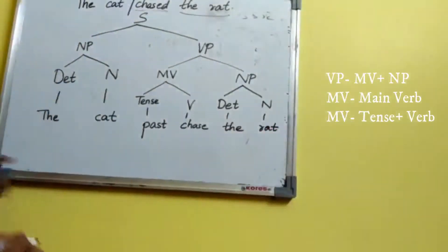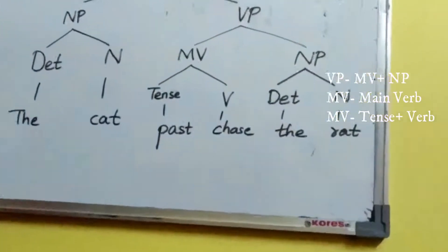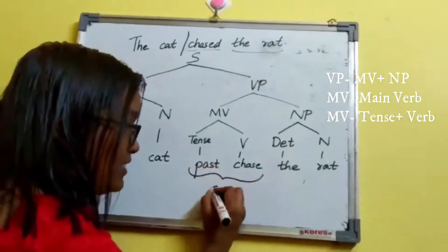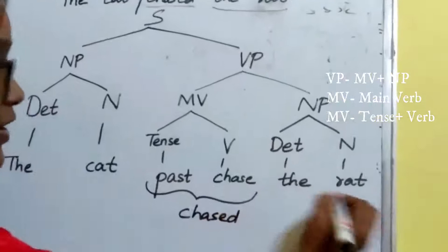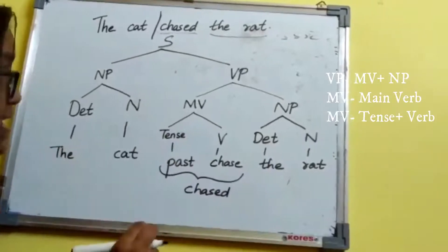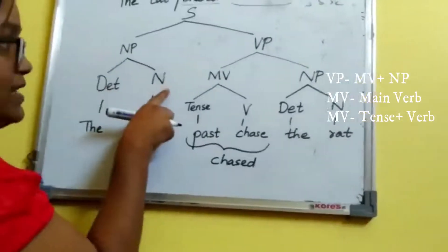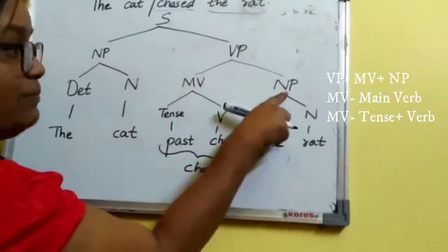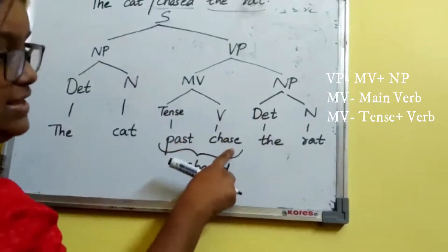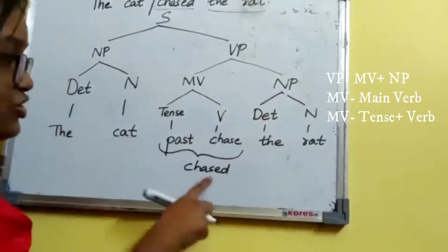So you see how I have analyzed it down to the last morphemes — the morpheme level. Reading it all together: 'the cat' and past of 'chase', that is 'chased', plus 'the rat' — 'The cat chased the rat.' This is how you do a simple IC analysis of a sentence. S equals NP plus VP; NP equals determiner plus noun; VP equals main verb plus noun phrase; and the main verb equals tense plus verb, which is past tense of 'chase'. NP again is determiner plus noun — 'the rat'.